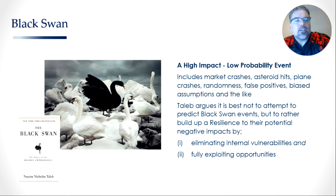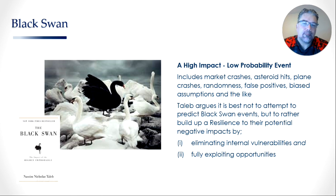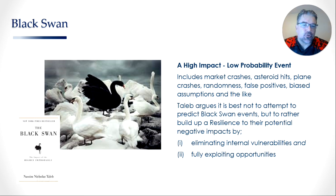The first concept is probably that of a black swan — it's probably the best known of the four. It was popularized by Nassim Taleb in his book The Black Swan, which is generally regarded as one of the best modern-day risk management books of all time. Essentially, a black swan describes a high-impact, low-probability event. This includes such risks as market crashes, an asteroid hit, a plane crash, randomness, false positives, and bias assumptions.